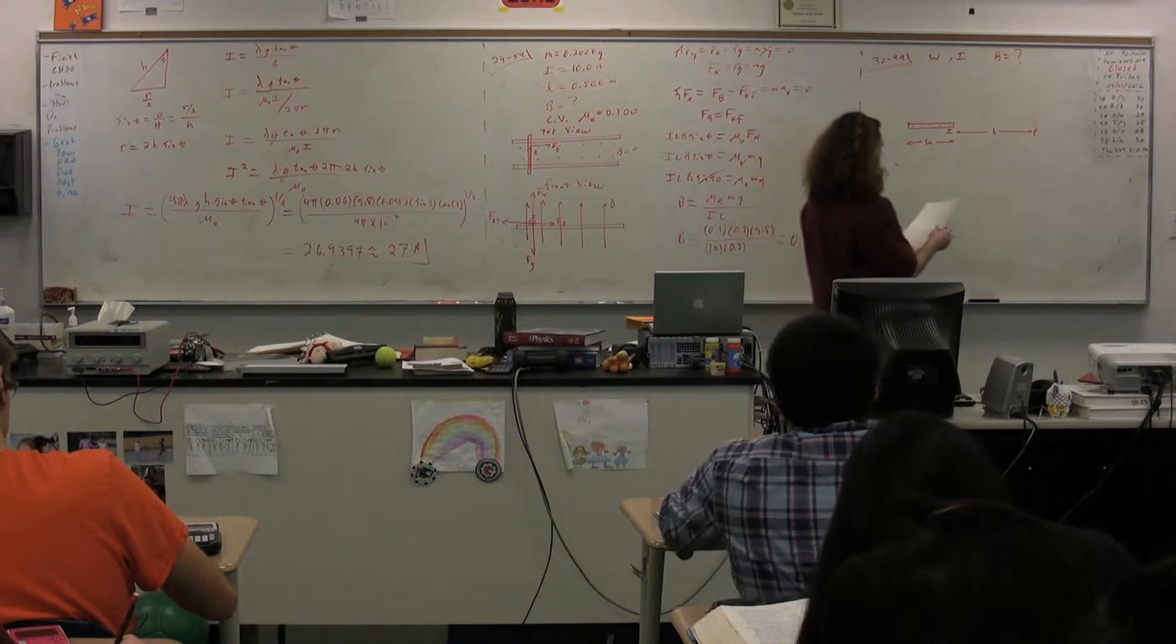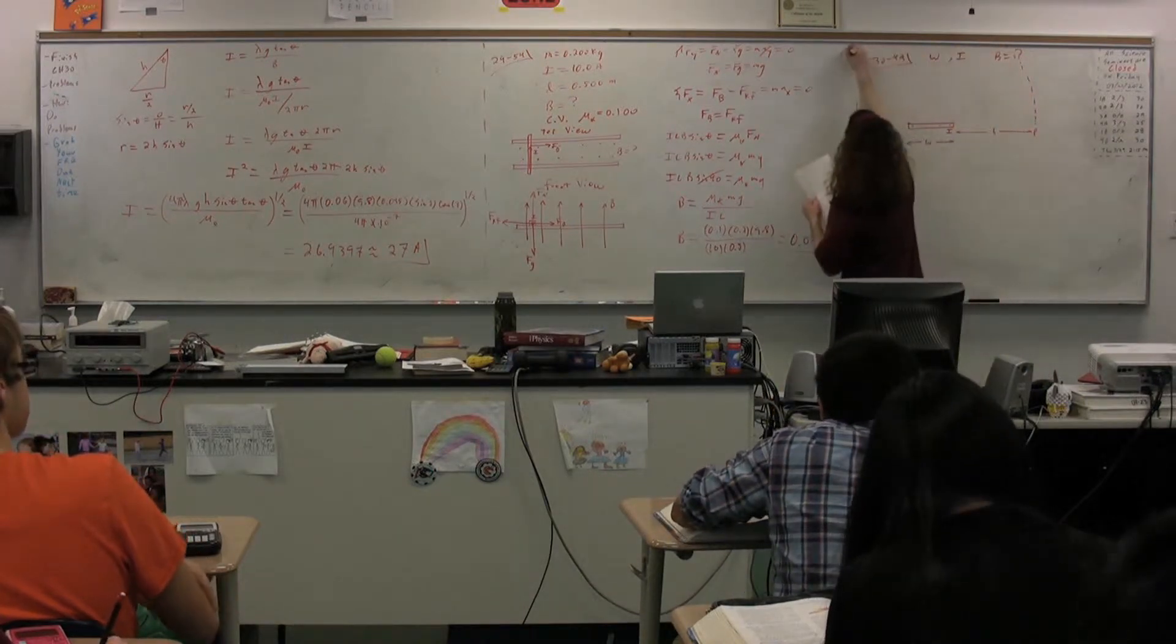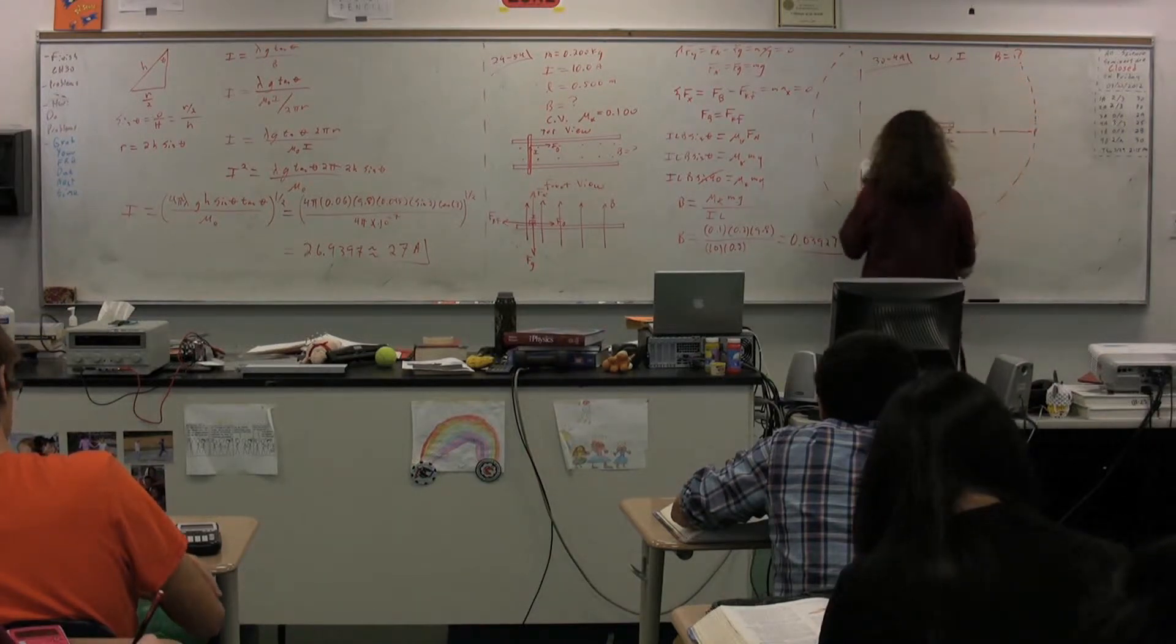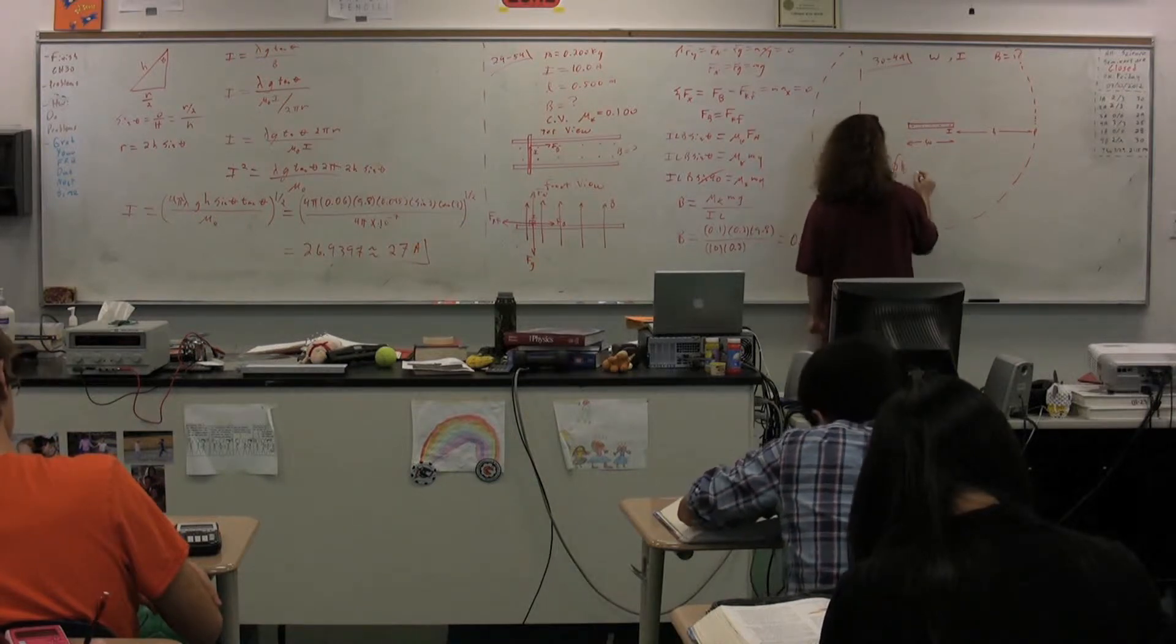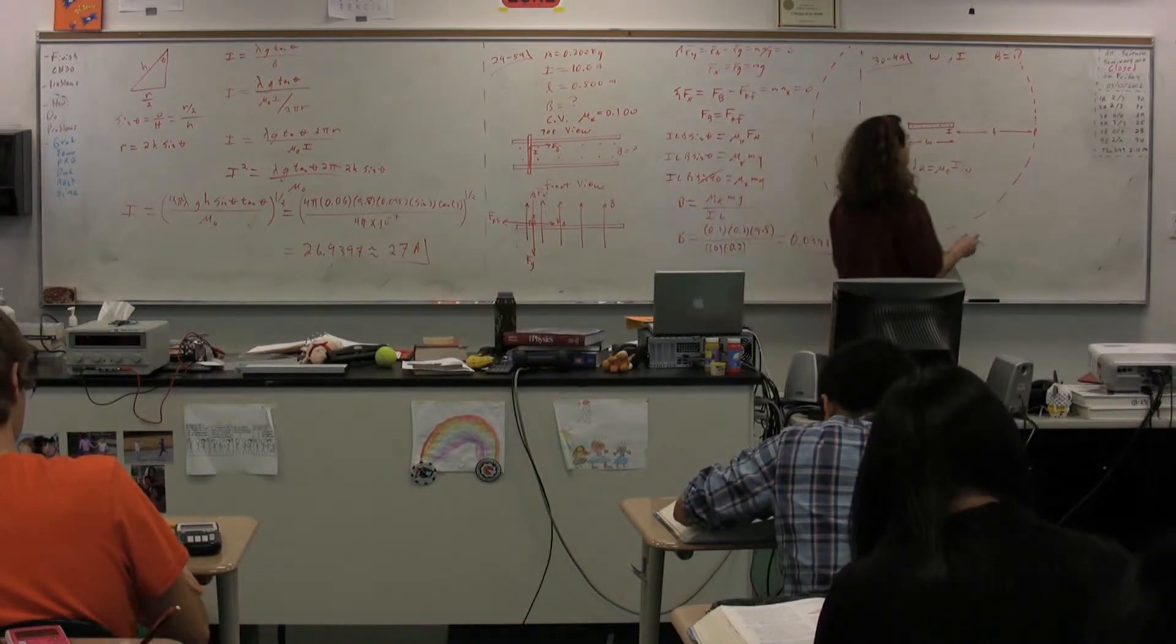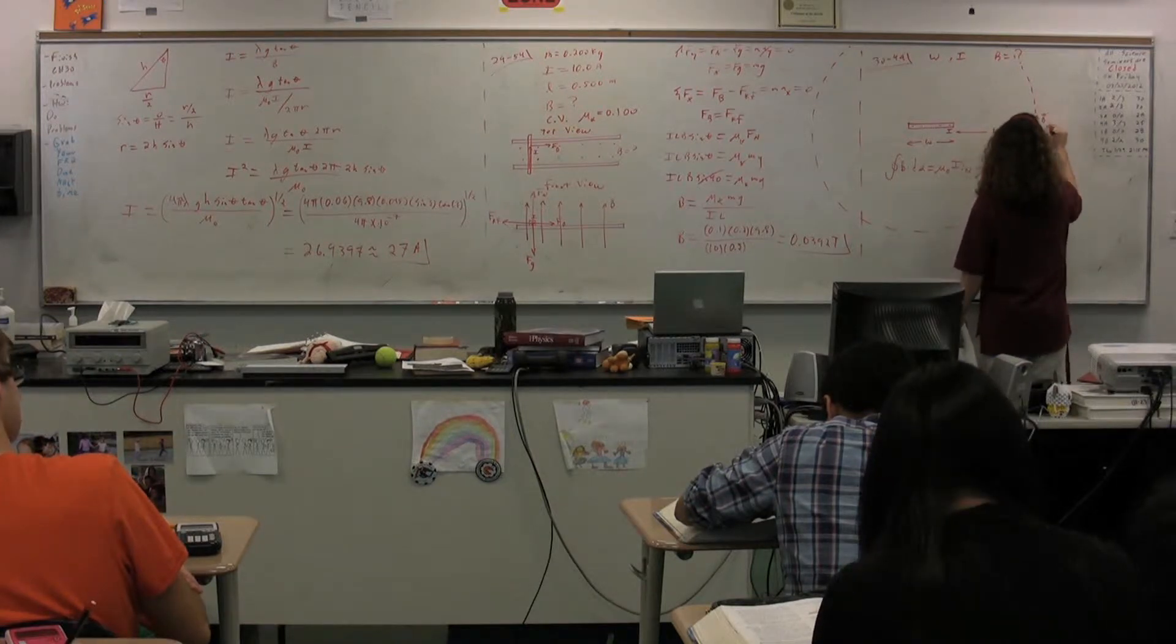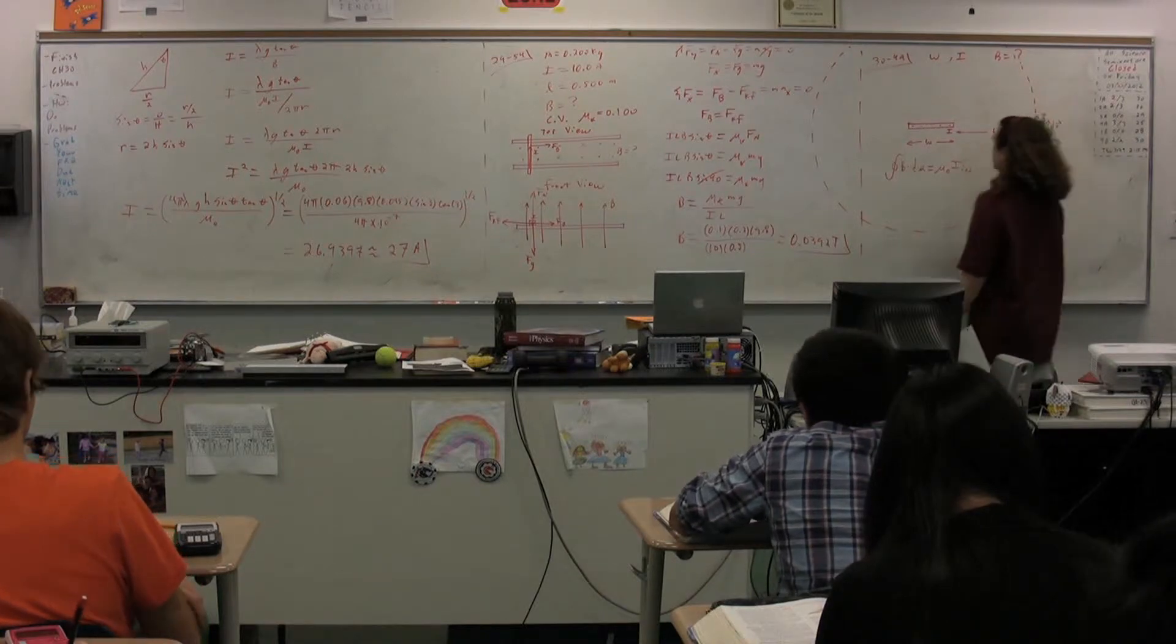So, if we draw an Amperian loop, we could start with Ampere's law. Closed loop integral B dot ds equals mu naught times the current on the inside. Okay. Let's see. We know B is up. Ds is also up.